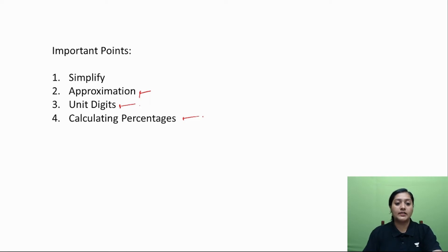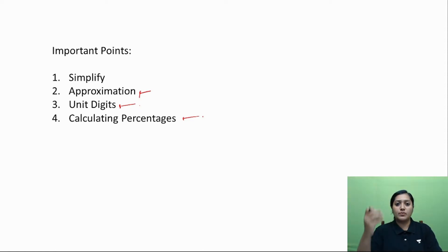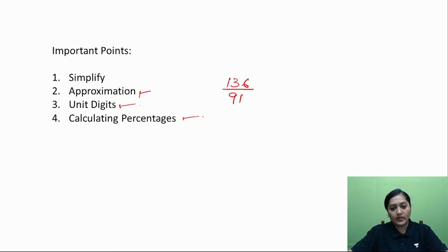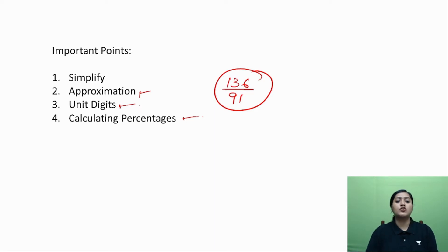Let me start with approximation. Whenever you get the data, whenever you simplify it, whenever you are calculating percentages, there are usually numbers that come in division — you have to divide something, take averages, calculate percentages. So there is a numerator and a denominator. For example, if you have a number like 136 upon 91, this will take time, and if the number is bigger than this it will obviously take more time. So how does approximation help? Many students ask me: how do I approximate?